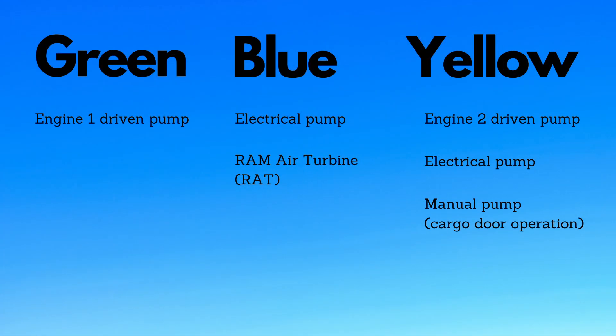A pump driven by engine one pressurizes the green system. The blue system is pressurized by an electric pump. A ram air turbine pressurizes the blue system in case of emergency. The yellow system is pressurized by a pump driven by engine two. An electric pump can also pressurize this system. It is used on the ground when the engines are stopped. A hand pump can also pressurize this system to operate the cargo door on ground when no electrical power is available.